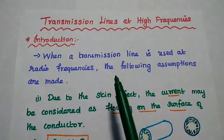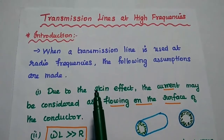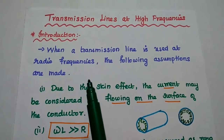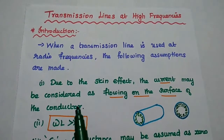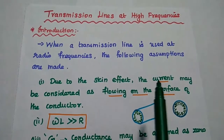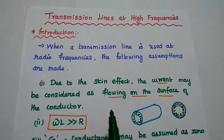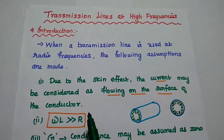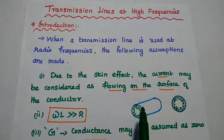Now we are going to analyze the transmission lines at high frequency range. When a transmission line is at very high frequency, i.e. at radio frequencies, the following assumptions are made. The first one is due to the skin effect — the current may be considered as flowing on the surface of the conductor. At high frequency range, the current is flowing on the surface of the conductor.